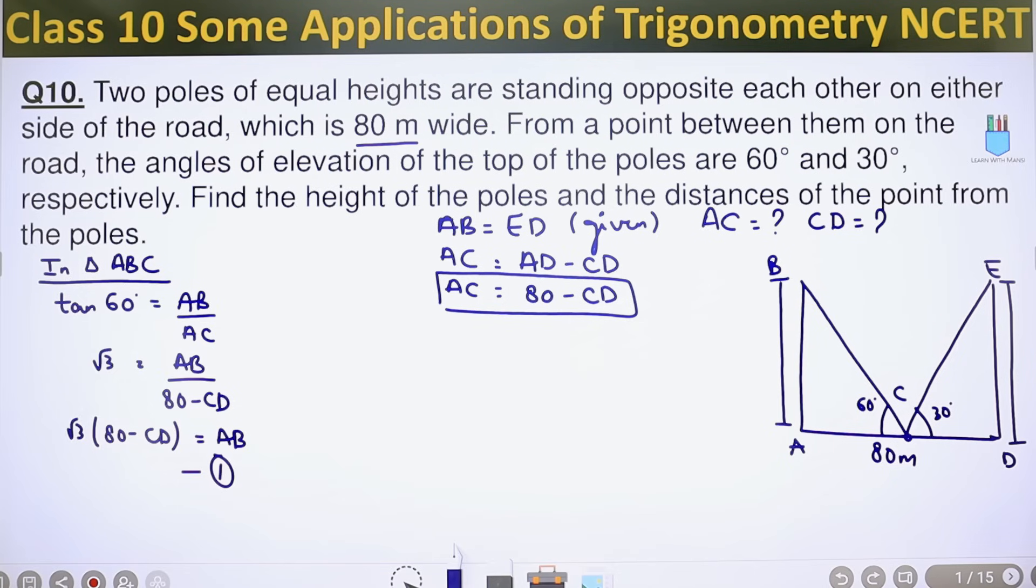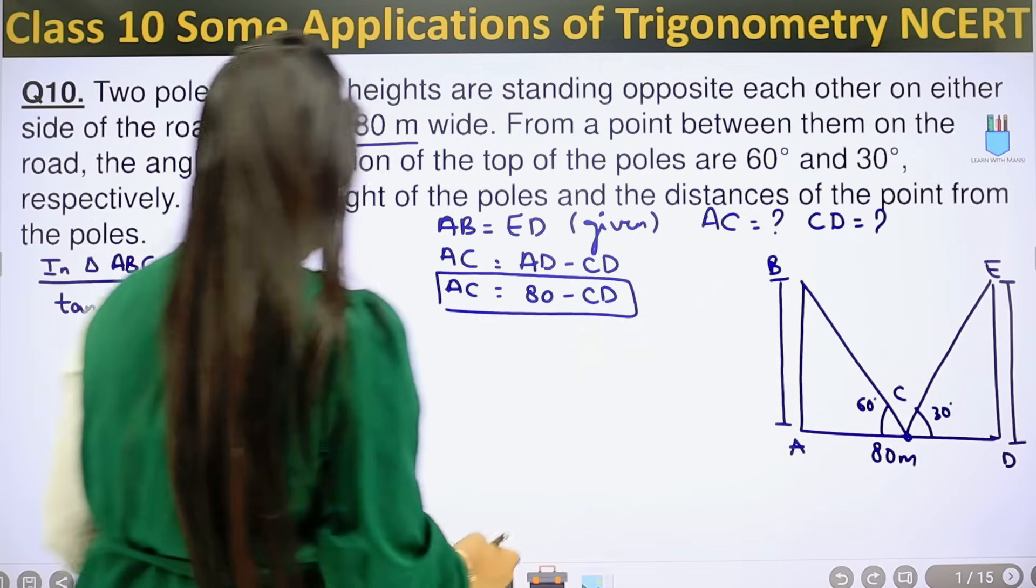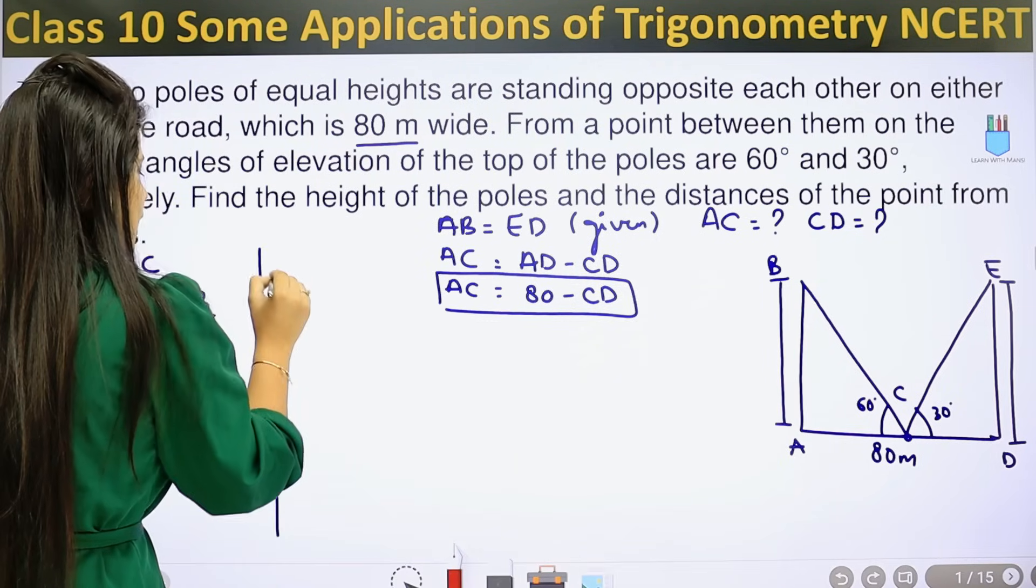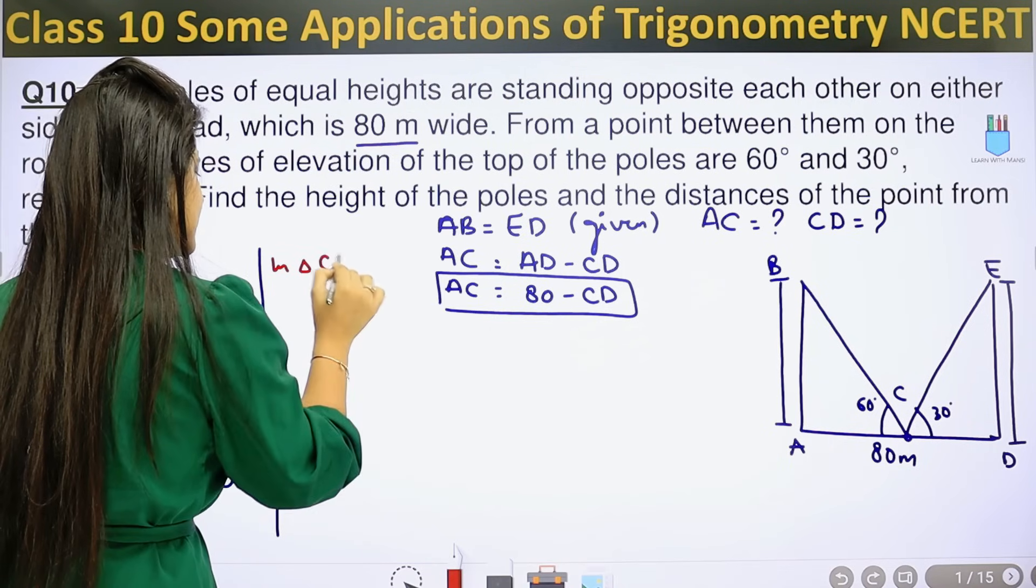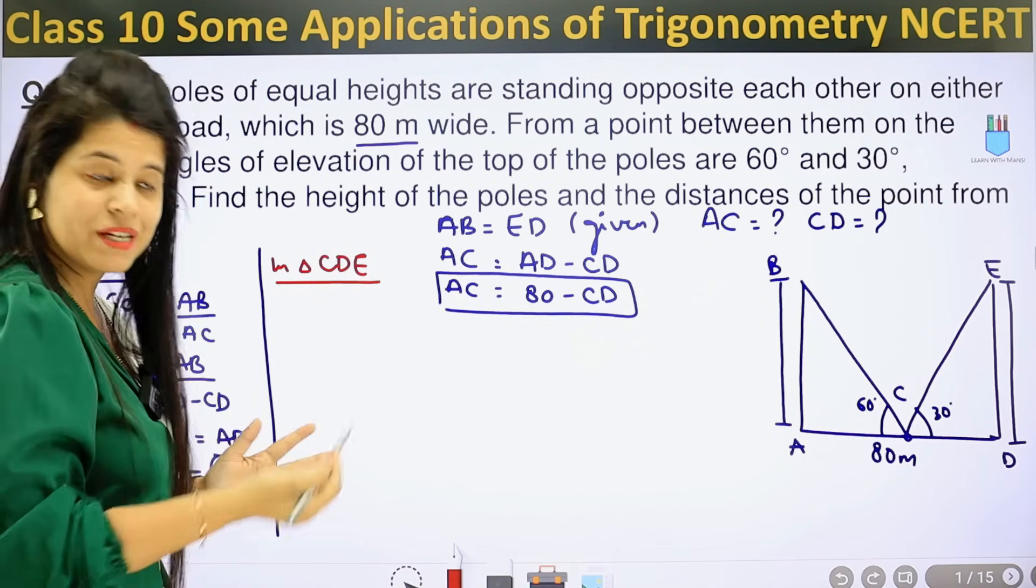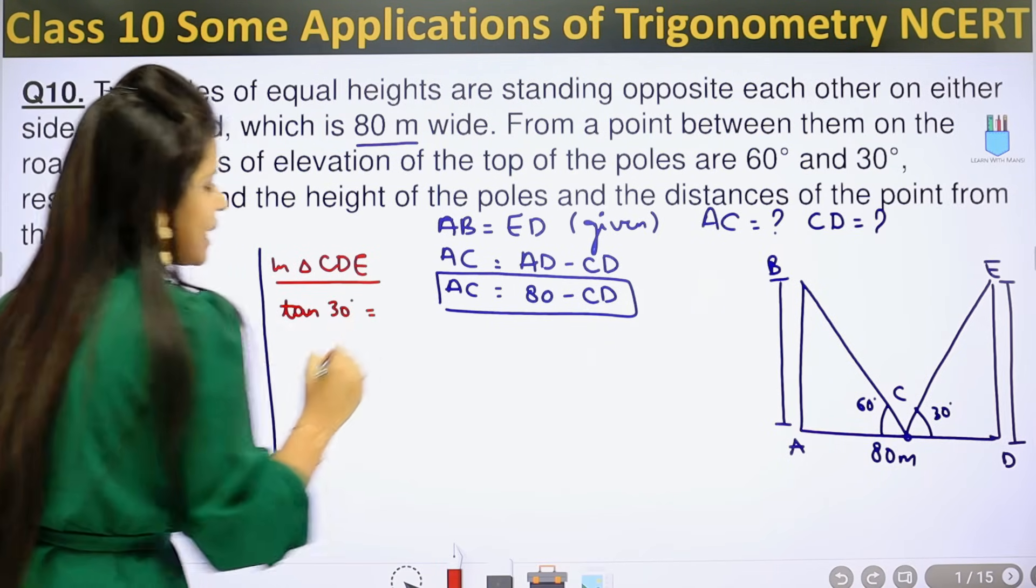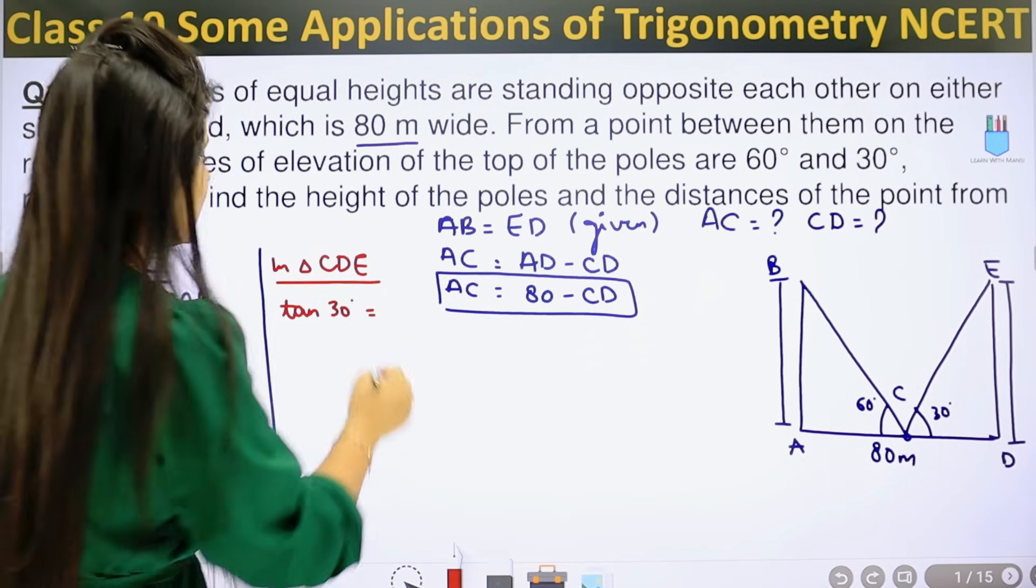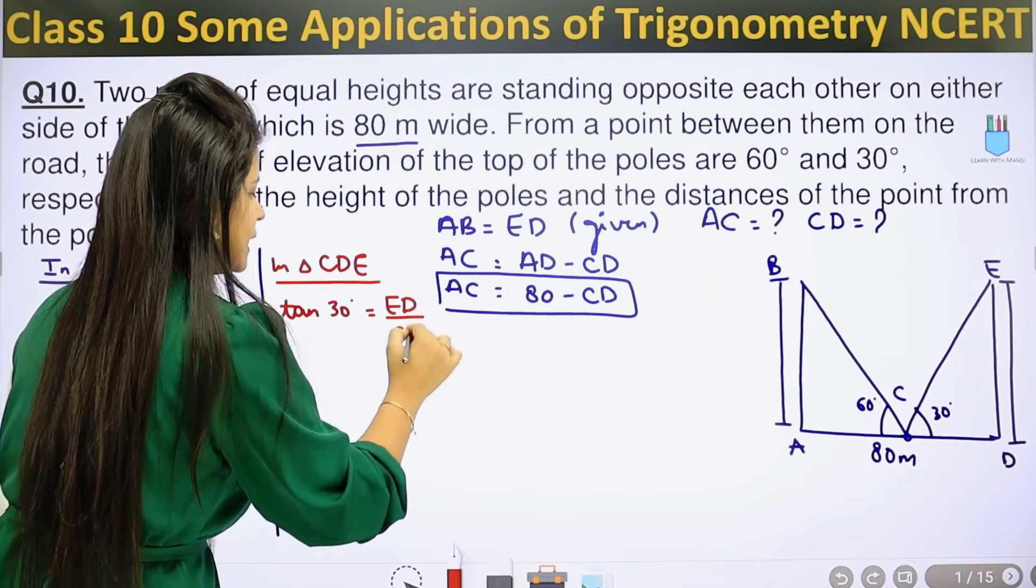AB has the value but in exact number there is no value. There is CD also. So we need more. Let's do the second triangle. So now we will talk about triangle CDE. So again we will use tan here. So tan 30 degrees. What will happen? Perpendicular upon base. Perpendicular is ED upon base CD.